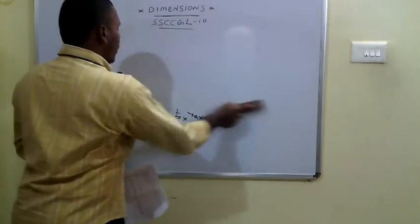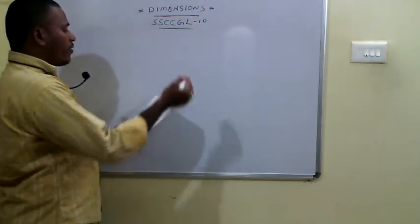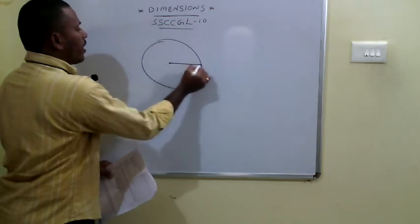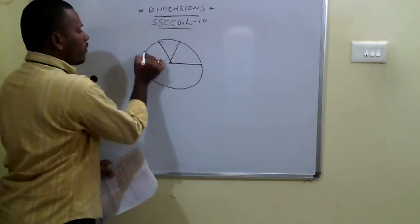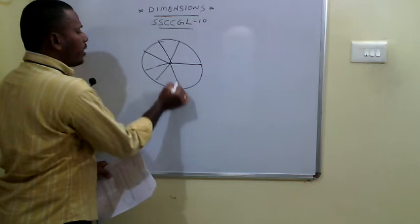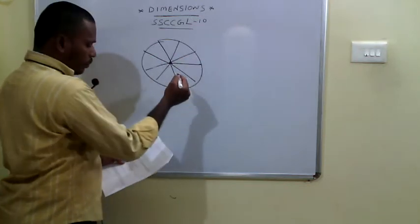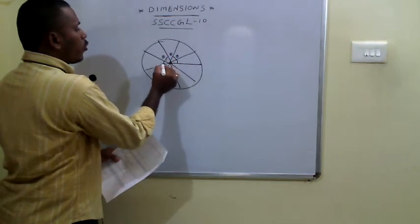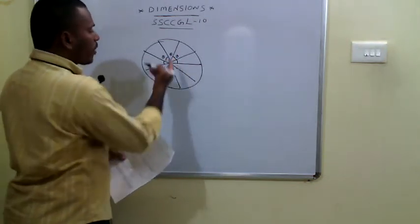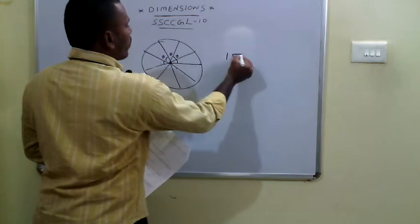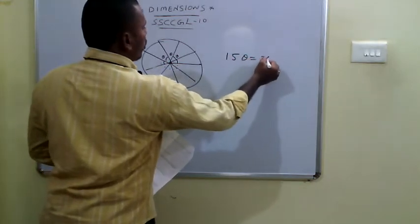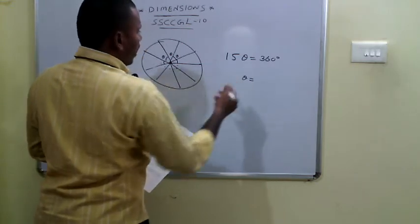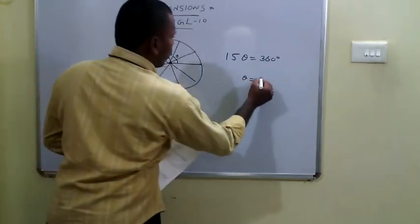The 61st problem: there are 15 radial spokes in a wheel, all equally spaced. The 15 spokes make 15 equal angles at the center totaling 360°, so each angle is 360/15 = 24 degrees.